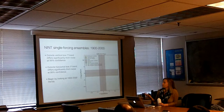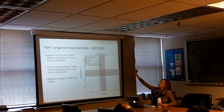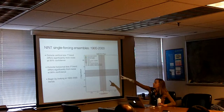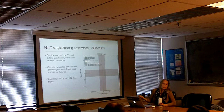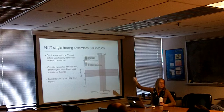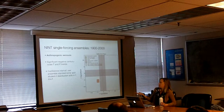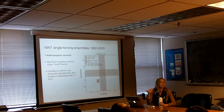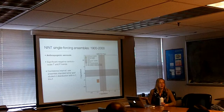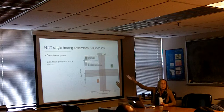This graph takes a little explaining. Outside this vertical-oriented box, if something's outside this box, that means the temperature trend differs significantly from noise at 99% confidence. If it's outside this horizontally-oriented box, that means the precipitation trend differs significantly from noise at 99% confidence. So if something's up in this quadrant, it means it's got a significant temperature trend and a significant precipitation trend. Anthropogenic aerosols show significant negative century-scale temperature and precipitation trends — this is what they're supposed to do, perfectly acceptable.